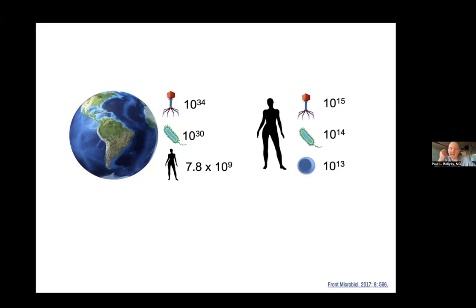And it's not just the planet. The human body actually has similar numbers. Right now, as you sit there and watch this program, you have on the order of 10 to the 13 cells that together comprise your body, but you have even more bacteria. And the bacteria, just like the planet, are far outnumbered by the bacteriophages that you have living there with you.